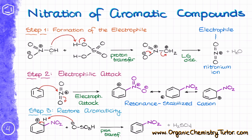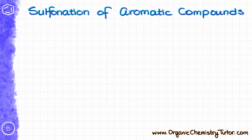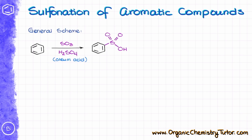Nitration is a very aggressive reaction and we never want to perform it on a sensitive or very complicated molecule. The nitric and sulfuric acids together can pretty much eat through just about anything, so many functional groups may be destroyed if we are not careful. Next we have the sulfonation reaction, in which we treat our aromatic molecule with fuming sulfuric acid — a solution of SO3 in concentrated sulfuric acid.